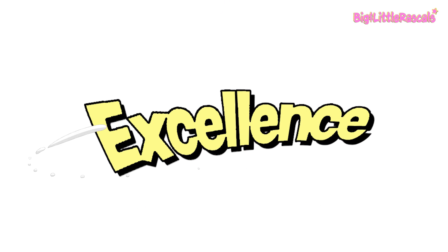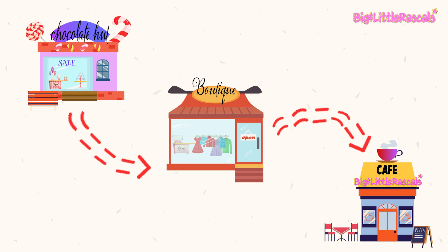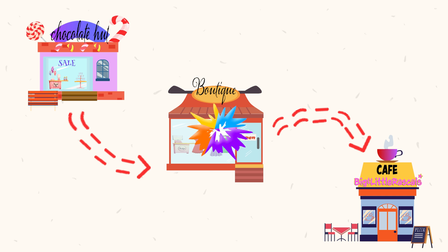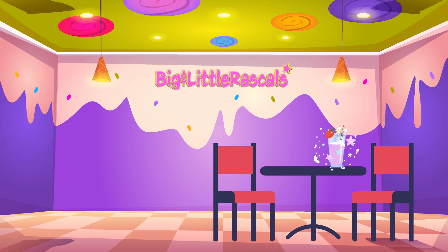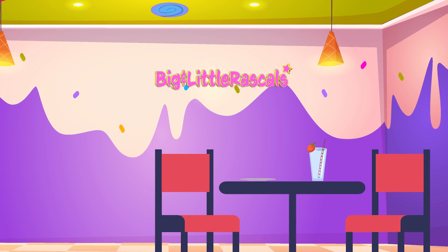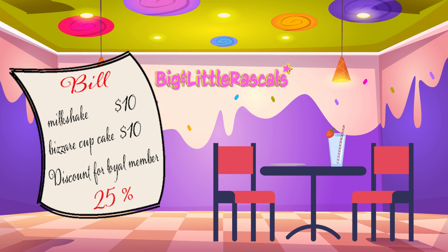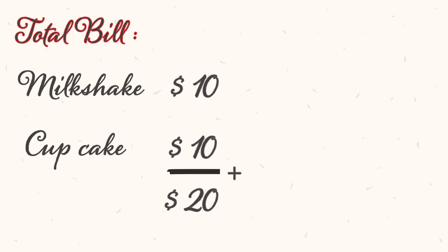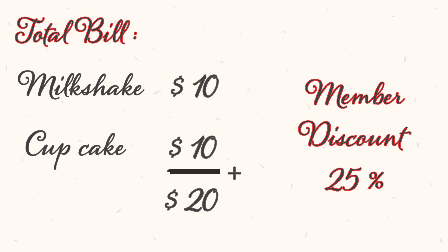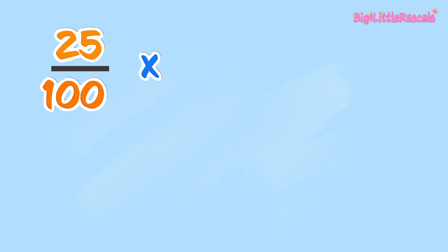Excellent, everyone! Good job! Now let's continue. After we went shopping, we are getting hungry. Let's check out our map — next, let's visit Big and Little Rascals Café. Yay! I would like to have a strawberry milkshake and a piece of cupcake. Yummy! Let's order them. After eating, the café owner says that since we are their loyal café customers, she is giving us a 25% discount from the bill. Fantastic!